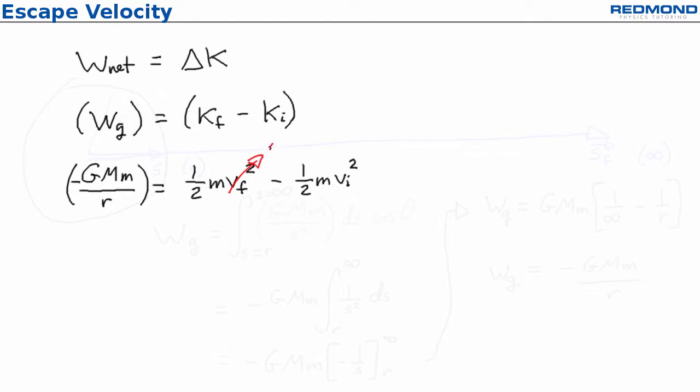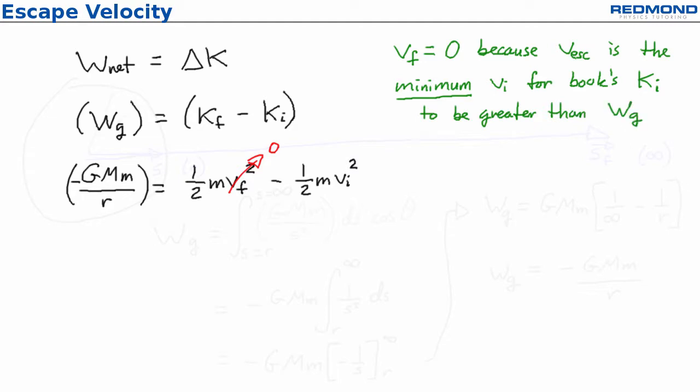V final is zero because we want to find the minimum V initial for the book to completely escape Earth's gravitational field, and that corresponds to giving the book just as much initial kinetic energy as the work that gravity will do to slow the book down while it's hurtling away.